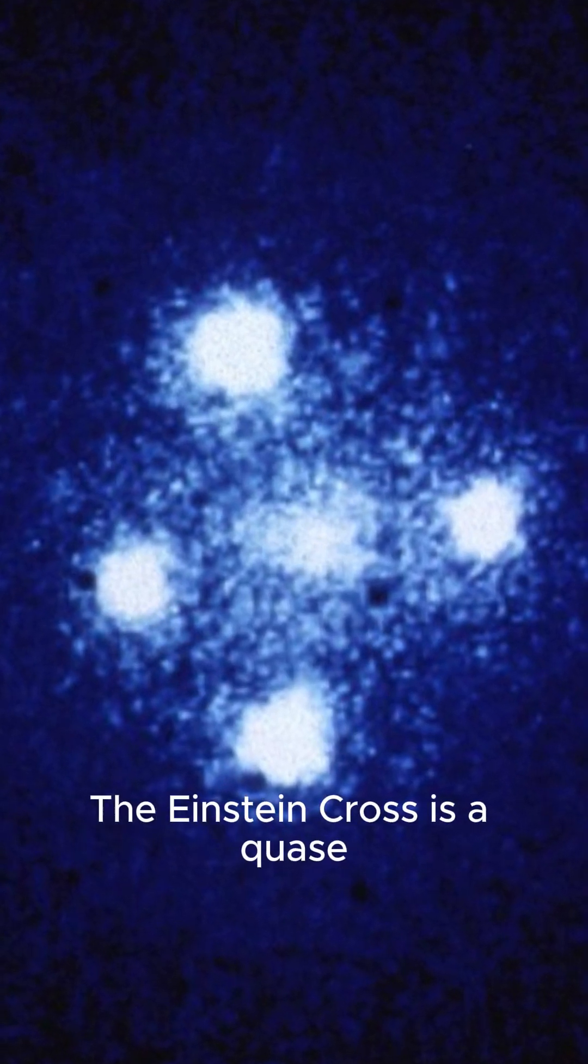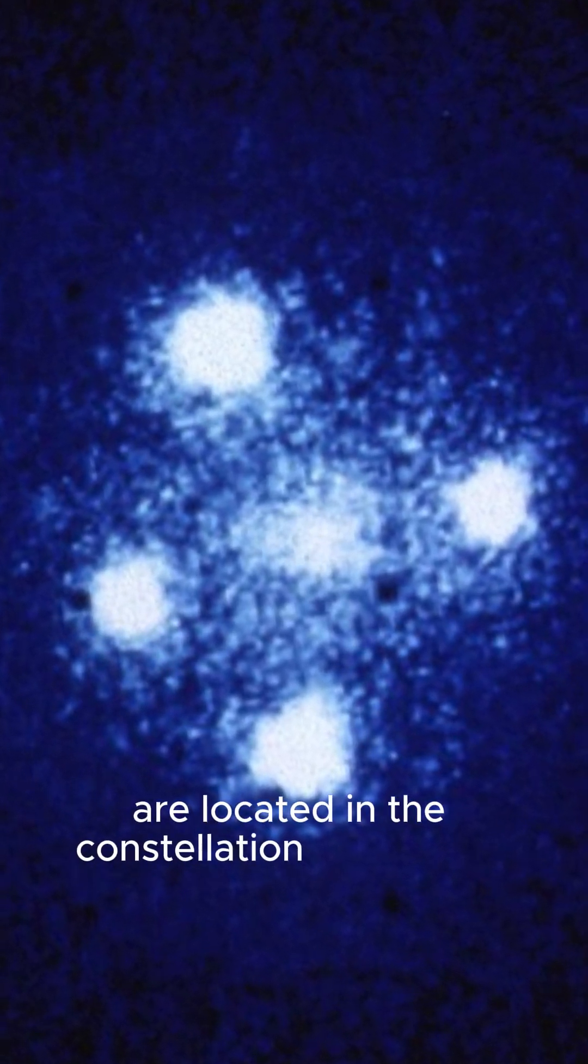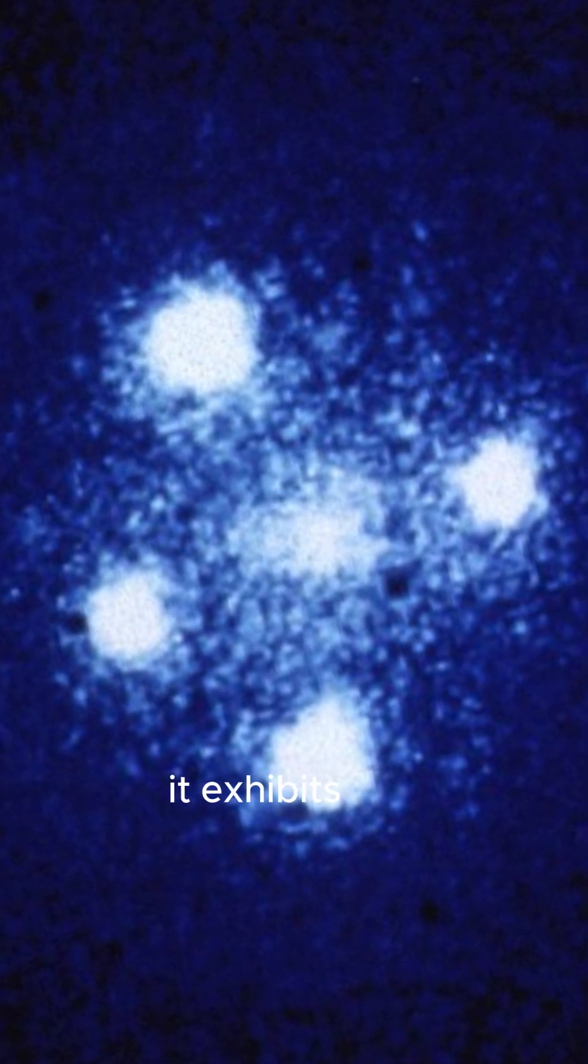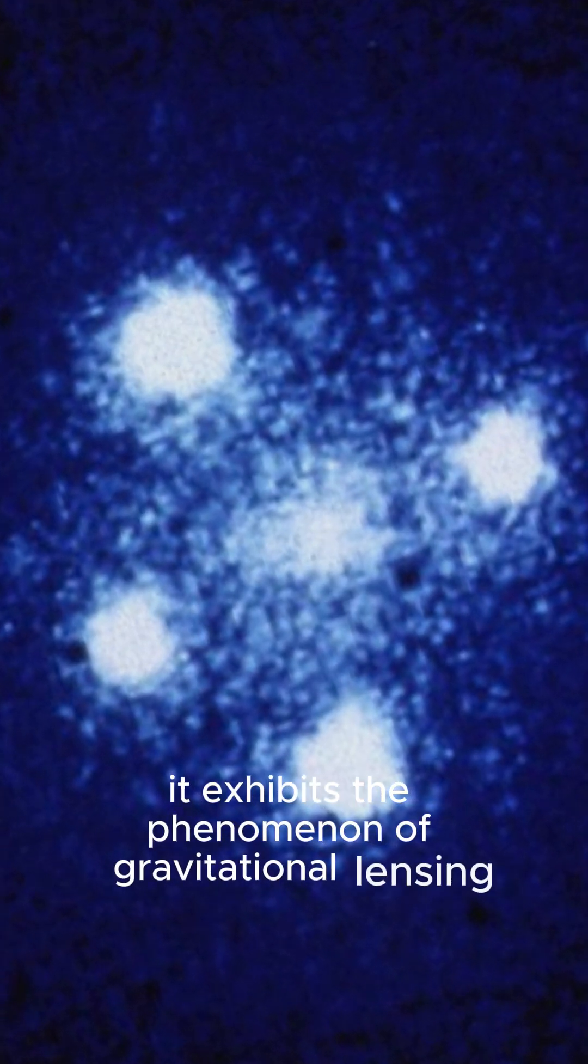The Einstein Cross is a quasar located in the constellation of Pegasus. It exhibits the phenomenon of gravitational lensing,